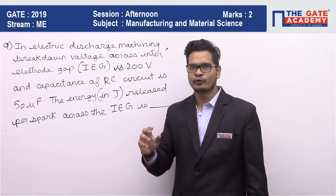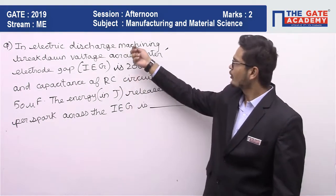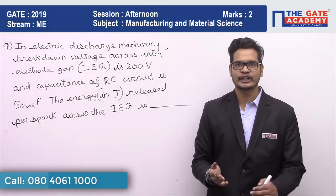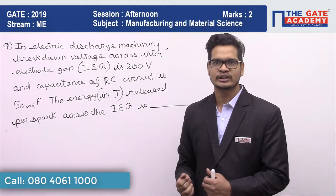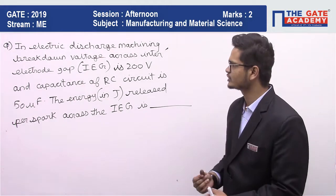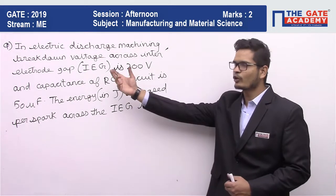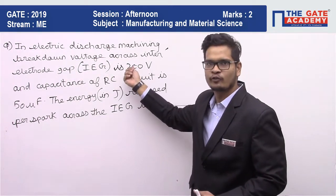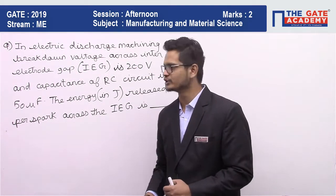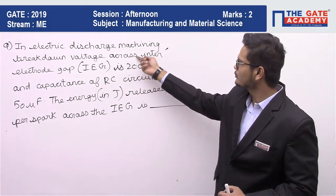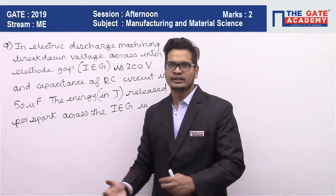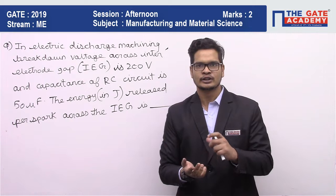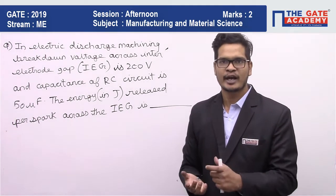Here they have used a few terms. Breakdown voltage is nothing but the voltage at which the spark is established — the arc is established. So they are talking about discharge voltage. Breakdown voltage, that is 200 volts, becomes the discharge voltage. They are also talking about inter electrode gap, which is nothing but the gap between two electrodes — that is the spark length.